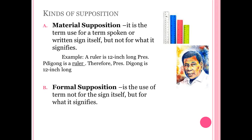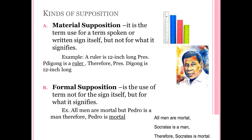Formal supposition is the use of a term not for the sign itself, but for what it signifies — the opposite of material supposition. For example, 'chair is a furniture' has formal supposition because it is not the word 'chair' that is a furniture, but what chair signifies. Another example: 'All men are mortal; Pedro is a man; therefore Pedro is mortal.' Since all men are mortal and Pedro is a man, Pedro is really mortal.